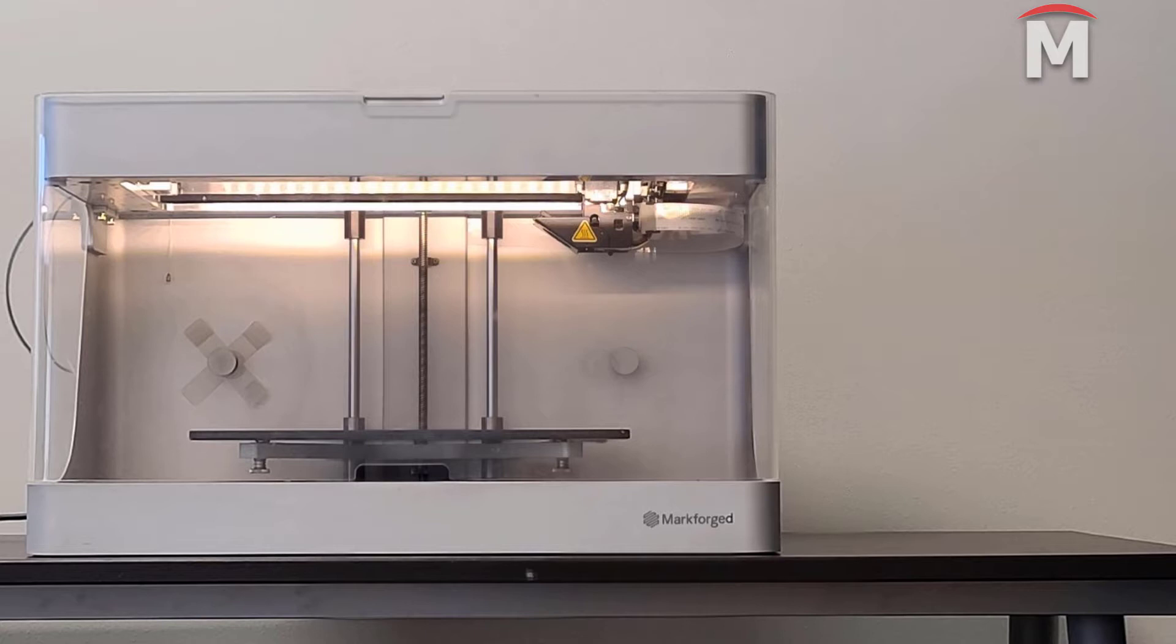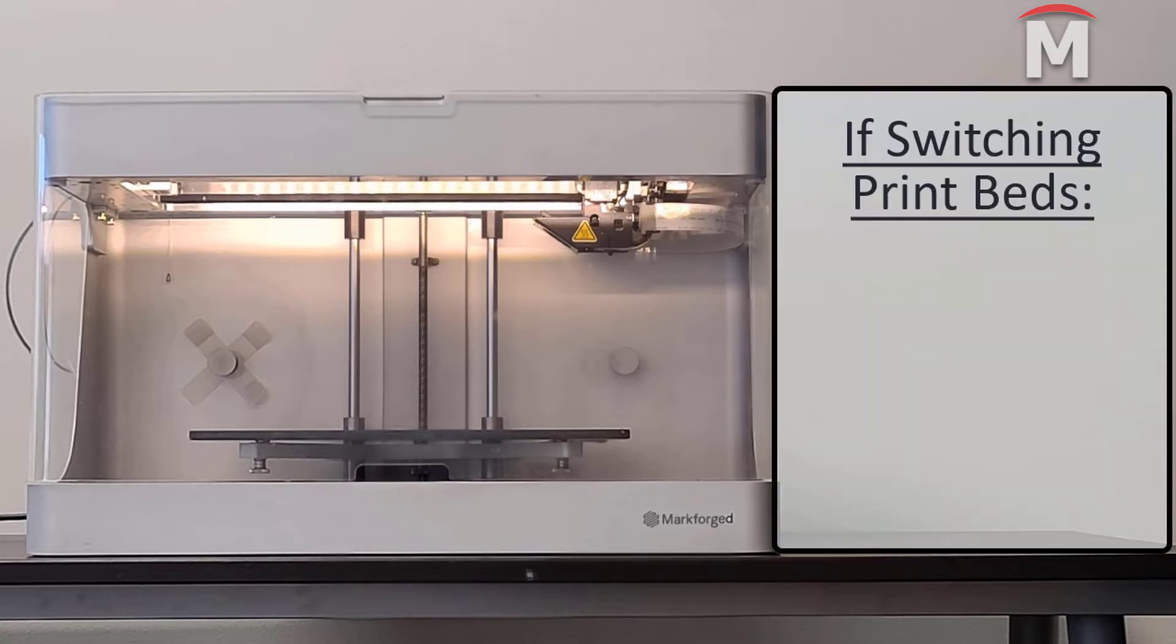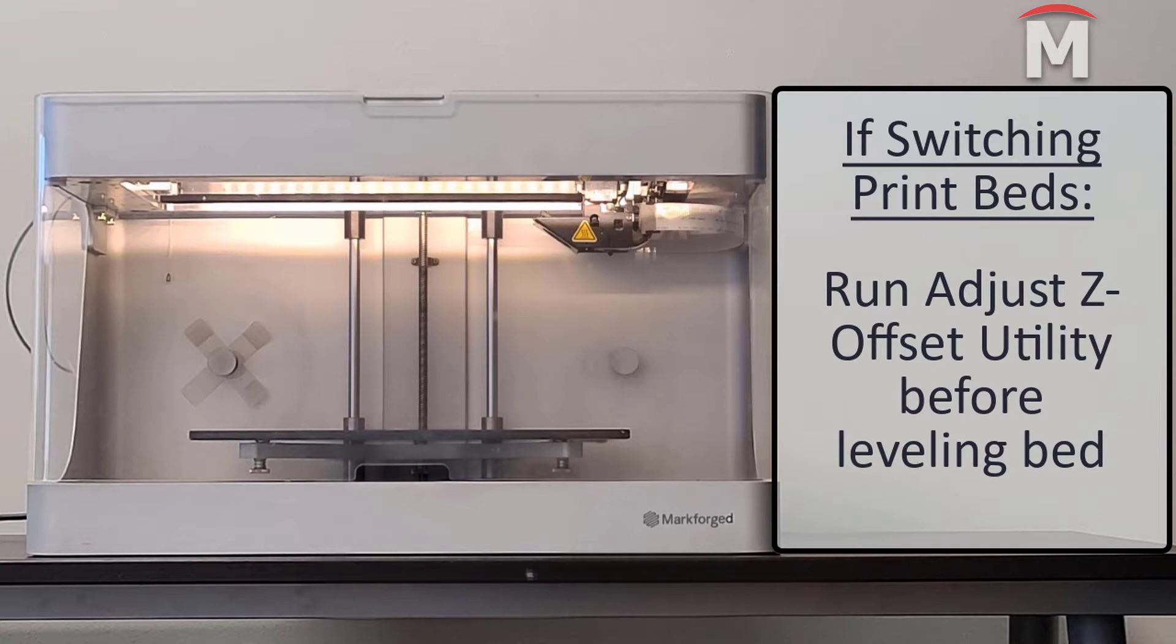I would also like to note, if we are switching between print beds, we will more than likely need to run the adjust Z offset utility to be able to properly level the bed.